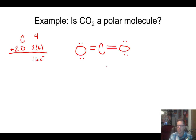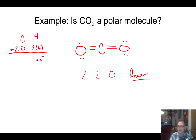Now let's figure out the geometry of CO2. How many electron domains are there around the carbon? We've got a bonding region on the left and a bonding region on the right, but no lone pairs — so two electron domains, both bonding, zero lone pairs. Looking at the chart, this means CO2 is a linear molecule. And because it's symmetrical, we can say right now that it's non-polar.